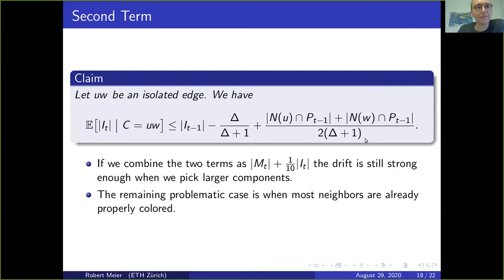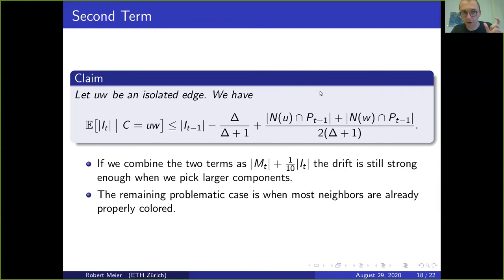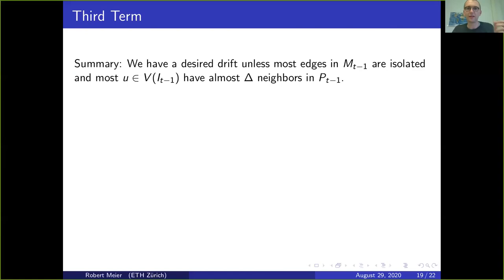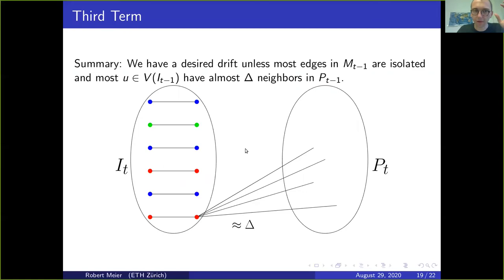When does the drift fail? The problematic term is large when essentially all neighbors of the two endpoints of an isolated edge are properly colored. Because we pick components randomly, trouble occurs when most edges are isolated and most isolated edges have most neighbors in P. In this situation, we have essentially only isolated edges left with properly colored vertices around them.